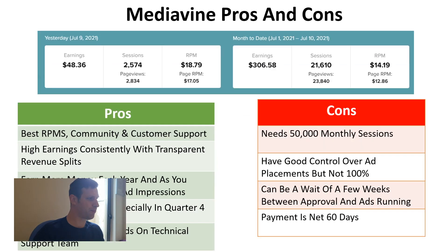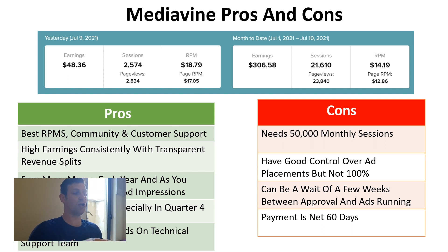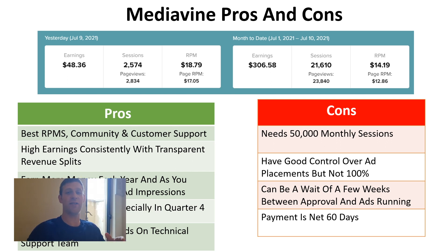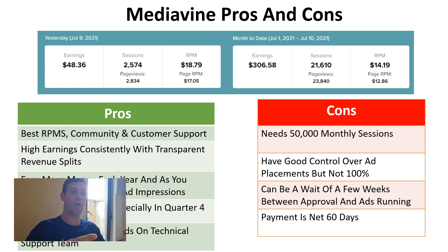The pros of Mediavine: best RPMs, community, and customer support. Highest earnings consistently, with transparent revenue splits — you get 75% upfront, rising to 80% when you hit 5 million ad impressions, plus an extra percent every year you're with them. Seriously high RPMs especially in Q4, when companies throw their yearly budgets into online advertising. With events like Black Friday in November and December, you could see RPMs of $50 or $60. They also have the best dashboard and hands-on technical support team.